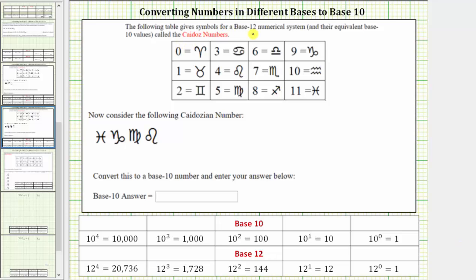The following table gives the symbols for a base-12 numerical system called the Kaidos numbers. Notice how because it's a base-12 system, each place value can contain a whole number from zero to 11.